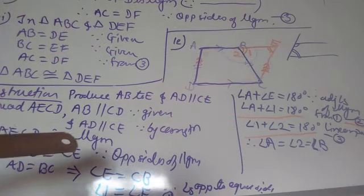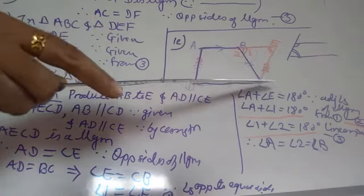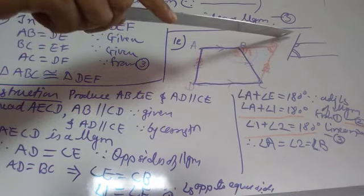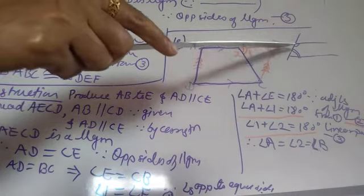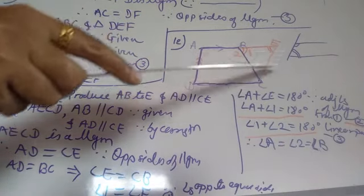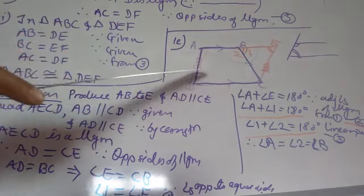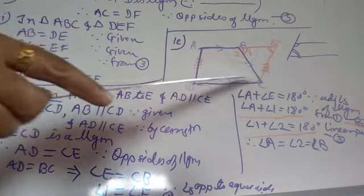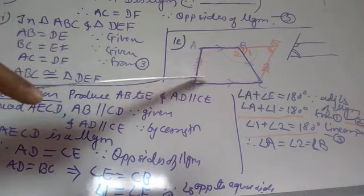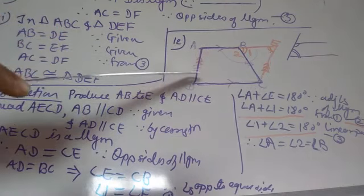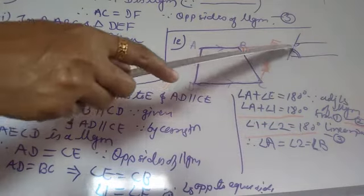A hint is given for the construction: extend AB and draw a line through C which is parallel to AD, intersecting the extended line at E. By this construction, we now have quadrilateral AECD in which AB is parallel to DC and AD is parallel to EC.